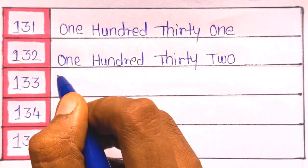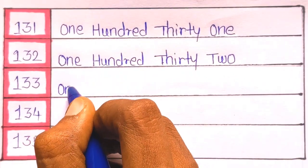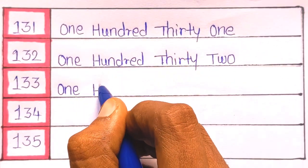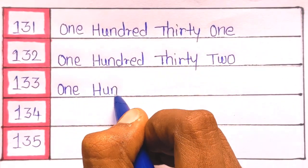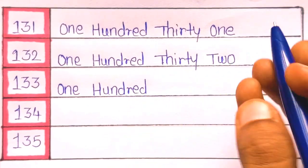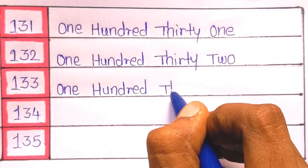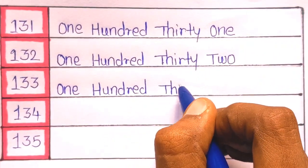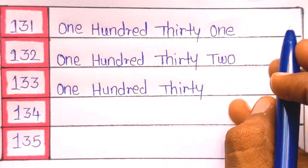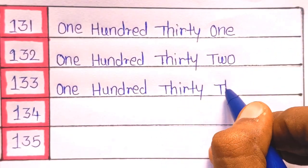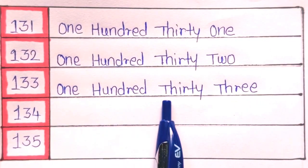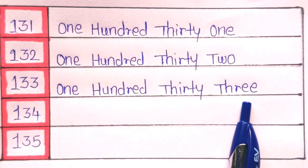Next it's 133. It's 133. O-N-E hundred, H-U-N-D-R-E-D, one hundred thirty, T-H-I-R-T-Y, thirty three, T-H-R-E-E. 133.